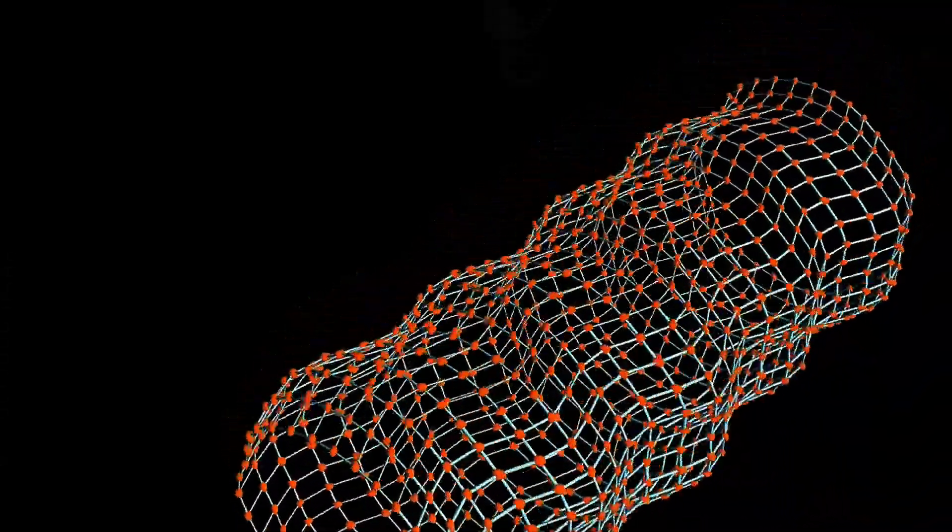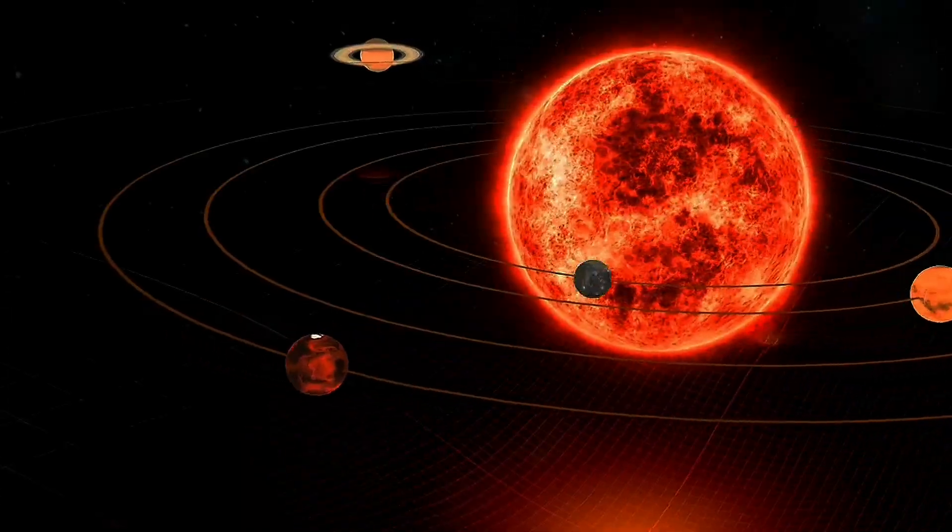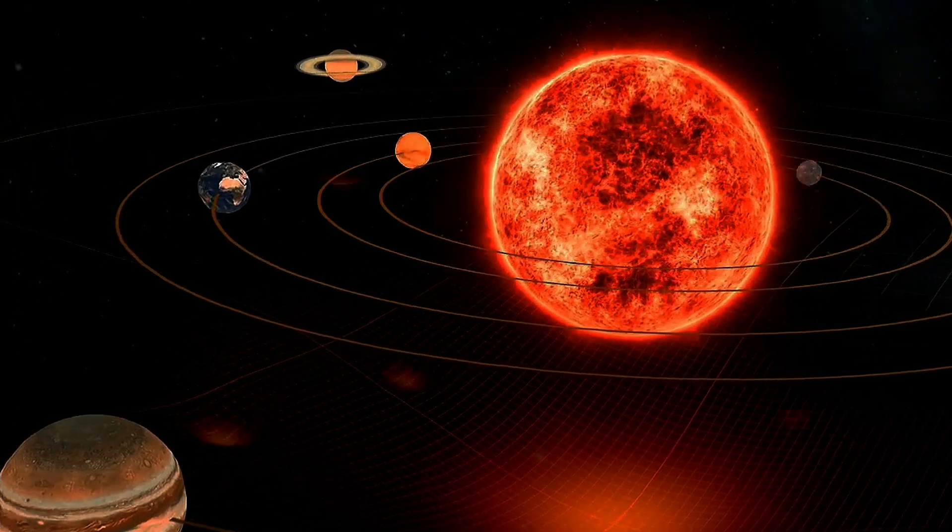Think of space and time as a giant stretchy fabric called space-time. When you place a heavy object like a planet or a star on this fabric, it causes a dent or curvature. This curvature is what we perceive as gravity.